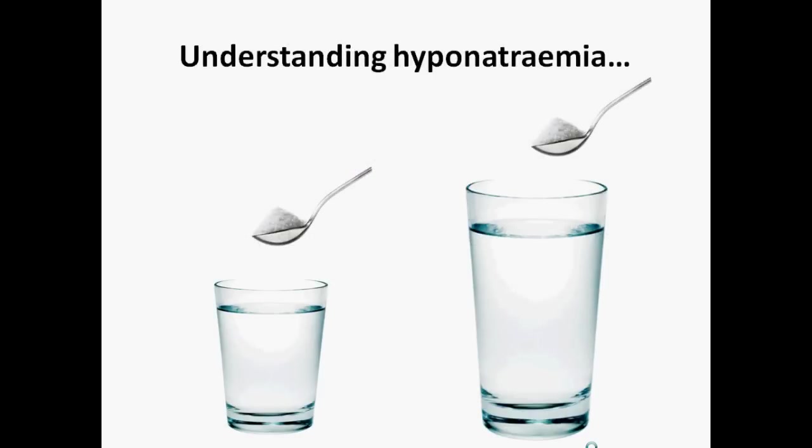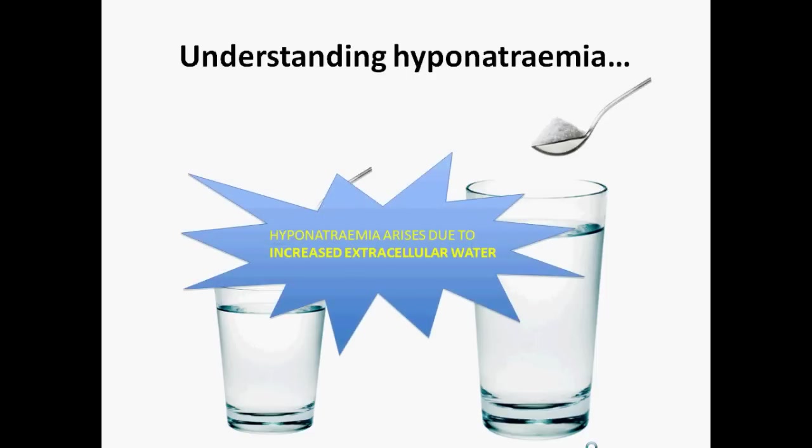On the left-hand side of this picture, salt is being added to a small glass of water. On the right-hand side, the same amount of salt is being added to a larger glass. The sodium concentration in the larger glass is less. This is important because the reason why people have a low sodium is because they have more extracellular water, and not because they have a reduced sodium. So the underlying pathogenesis of hyponatremia is increased extracellular water.